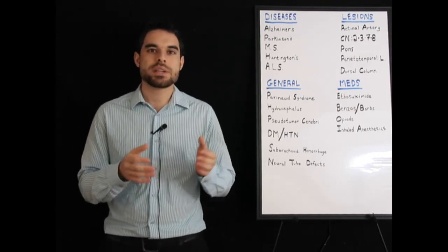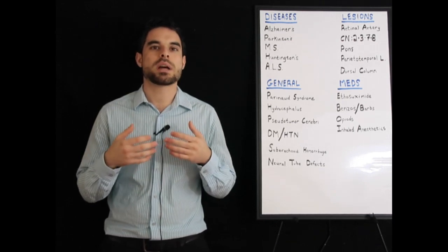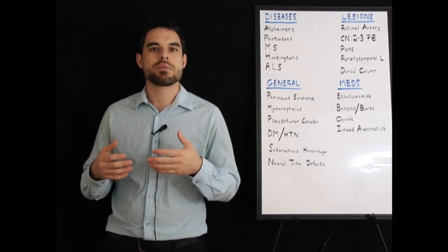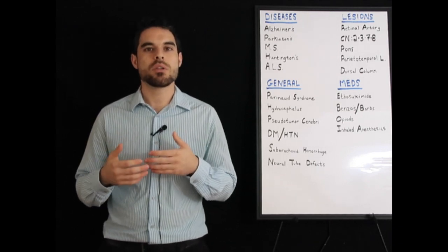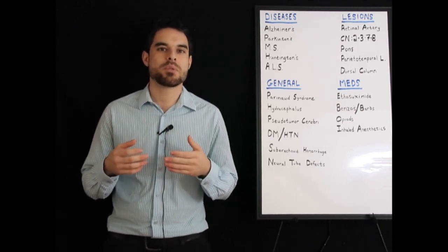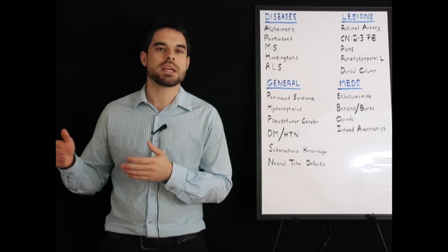Huntington's disease presents between the ages of 20 and 50. It's an autosomal dominant disease, a trinucleotide repeat, CAG. It affects the caudate, and you have low acetylcholine and low GABA. People remember CAG: caudate, acetylcholine, GABA.